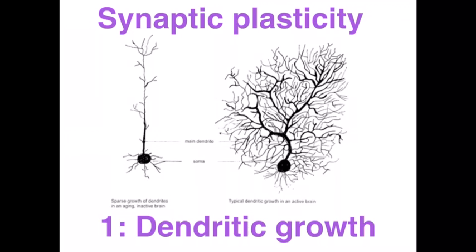Ultimately we can end up with a phenomenon known as synaptic plasticity — the brain's ability to rewire itself — which enables us to learn new skills over the lifespan. Let's look at three physical changes that occur as a result of memory formation.